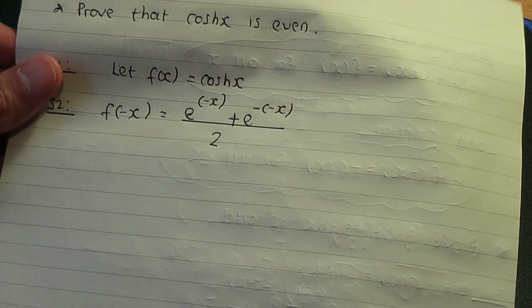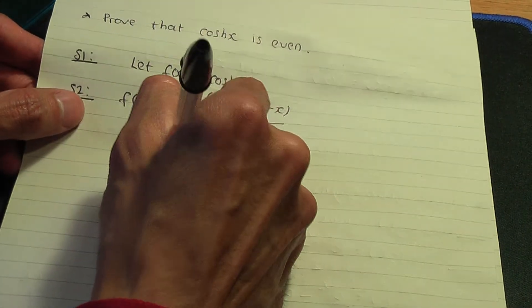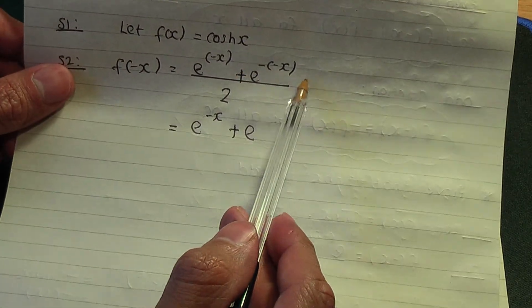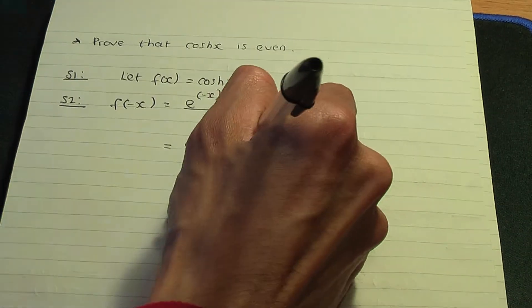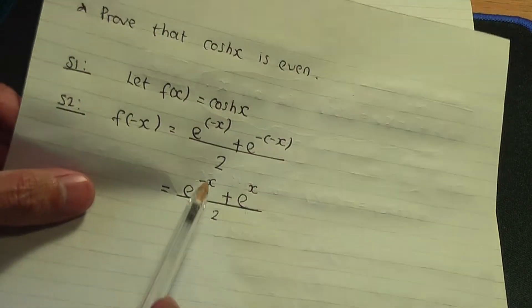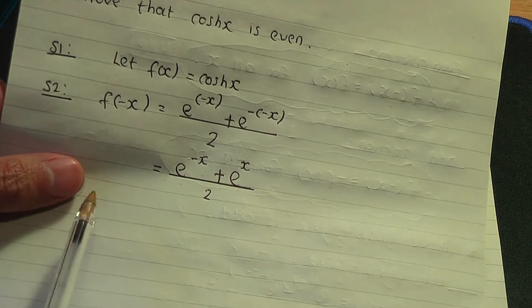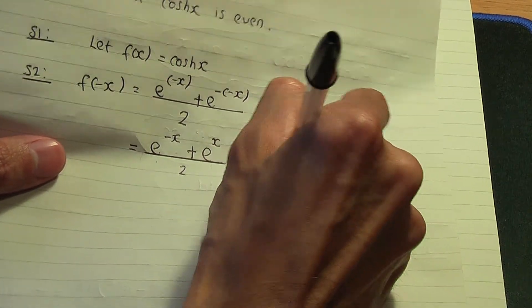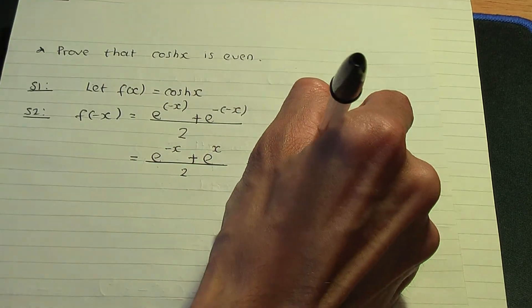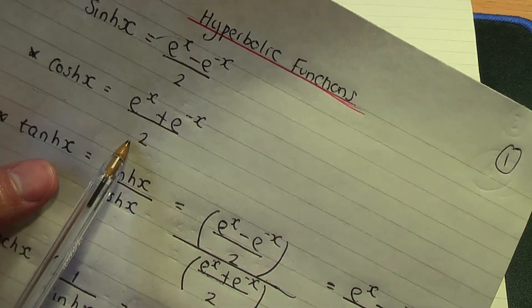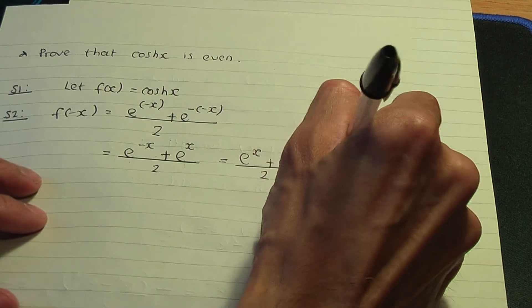If we remove the brackets: e to the minus x plus e to the power of x over two — since minus times minus is a plus. As you can see, this is the same as the definition of hyperbolic cosine. If I swap the terms in the numerator, giving e to the x plus e to the minus x over two, this is precisely the definition of hyperbolic cosine — so this is f of x.